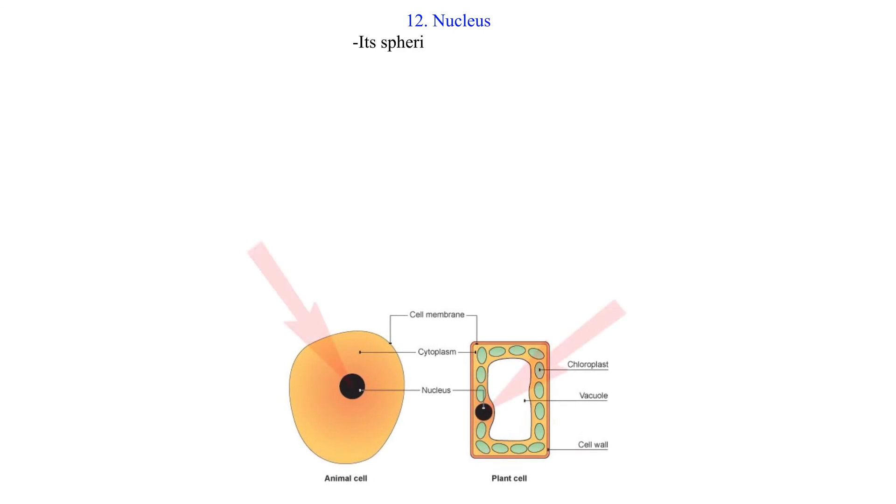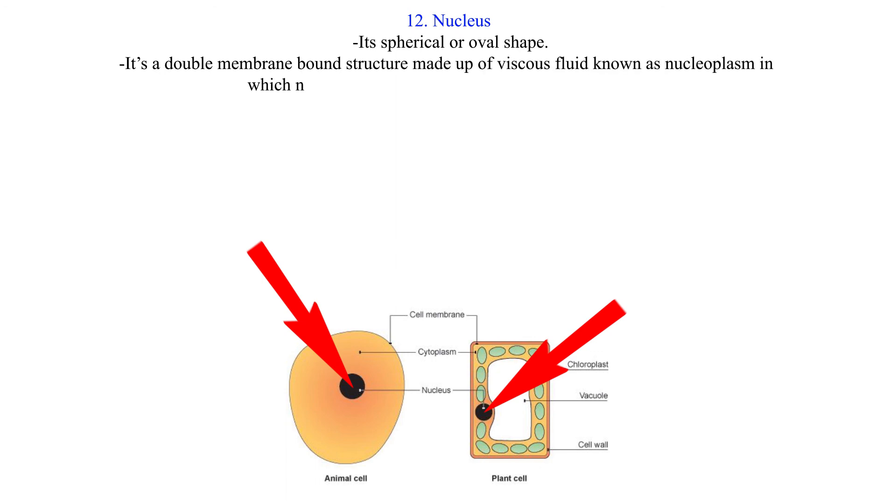12. Nucleus. It's spherical or oval in shape. It's a double membrane-bound structure made up of viscous fluid known as nucleoplasm in which nucleolus and chromatin materials are suspended.